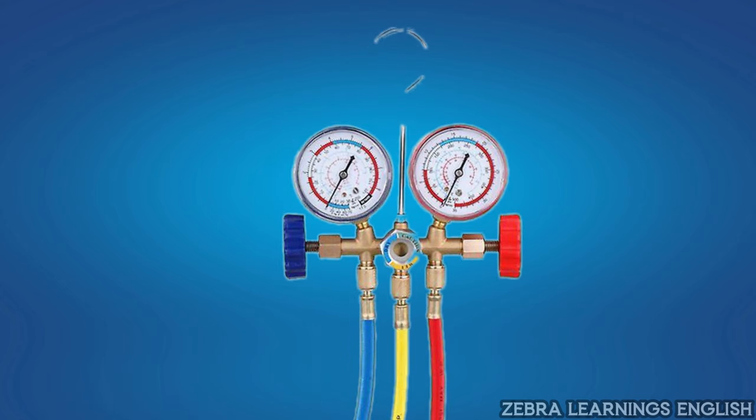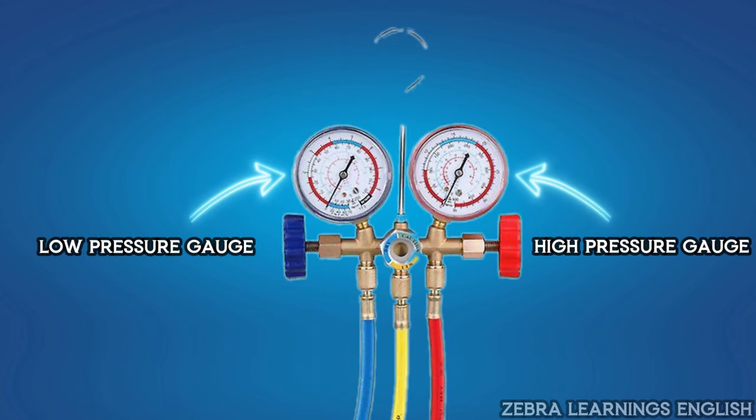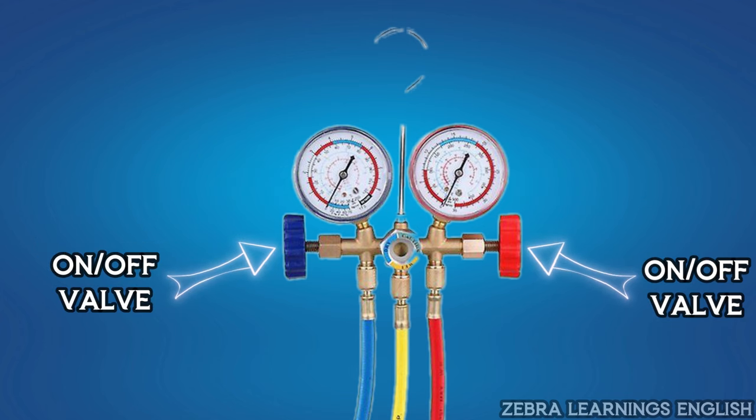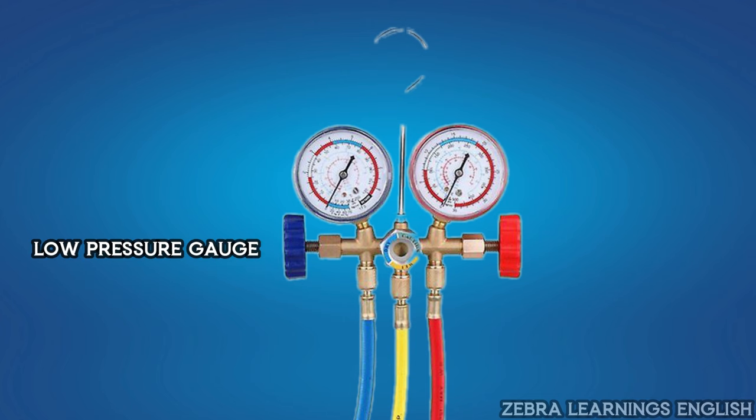It has two gauges. One is low pressure gauge and the other is high pressure gauge. And there will be two on-off valves. In this, blue color is low pressure gauge. Red color is high pressure gauge.